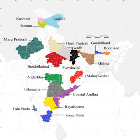Statehood was conferred upon Himachal Pradesh on 25 January 1971, and to Manipur, Meghalaya and Tripura on 21 January 1972. The Kingdom of Sikkim joined the Indian Union as a state on 26 April 1975. In 1987, Arunachal Pradesh and Mizoram became states on 20 February, followed by Goa on 30 May of the same year.